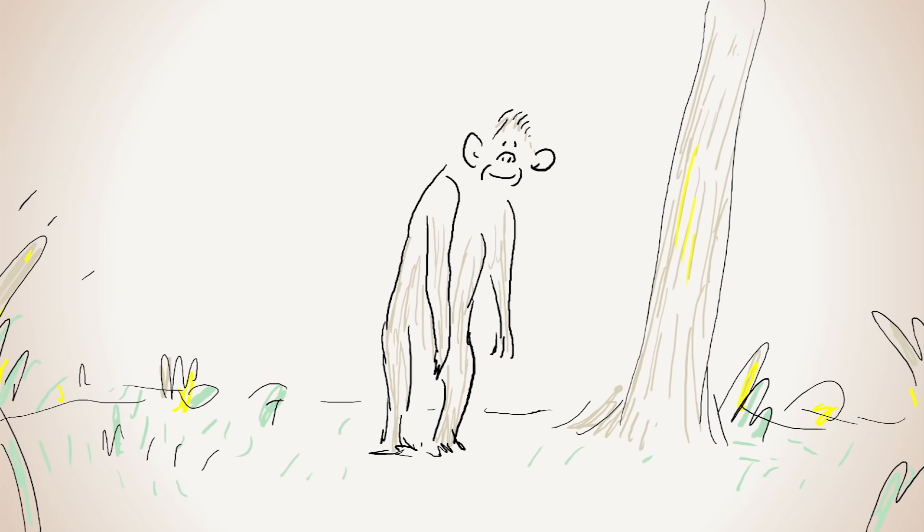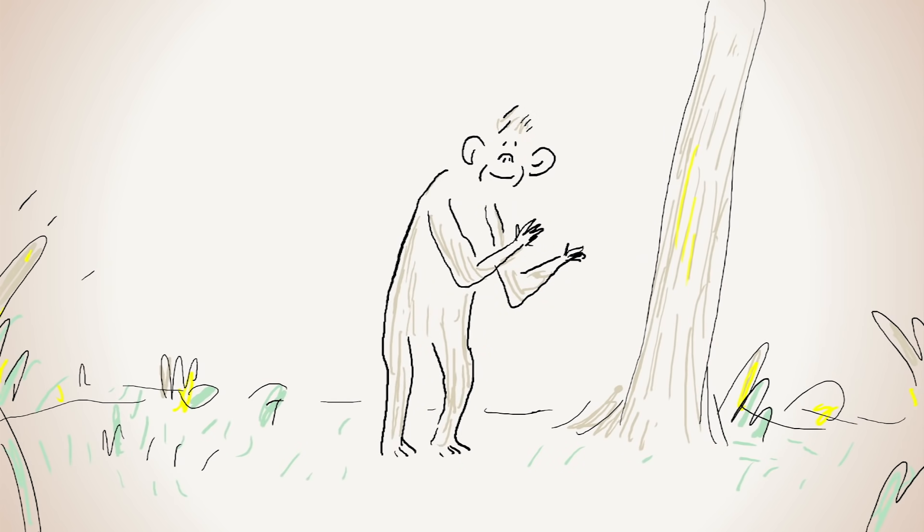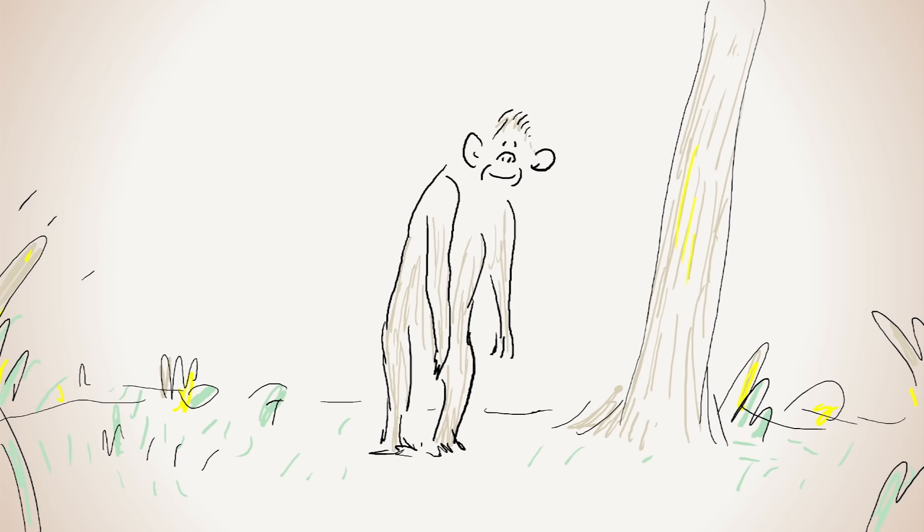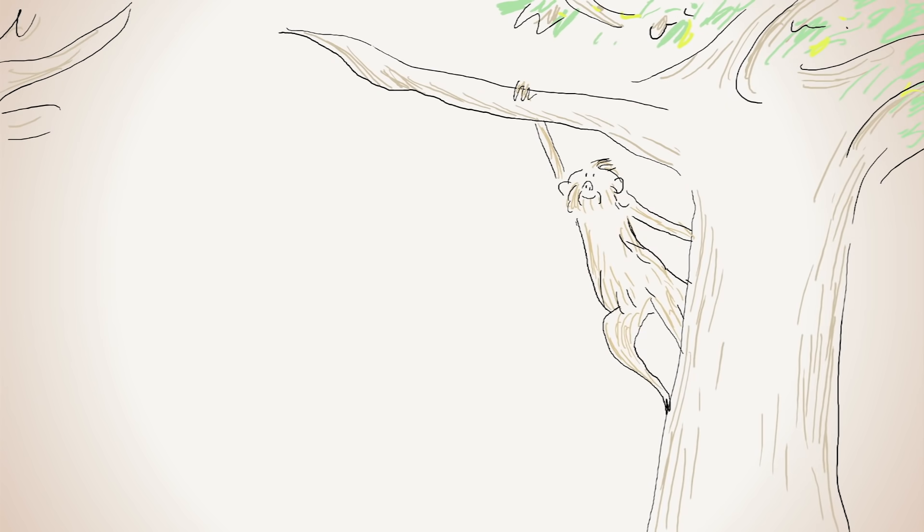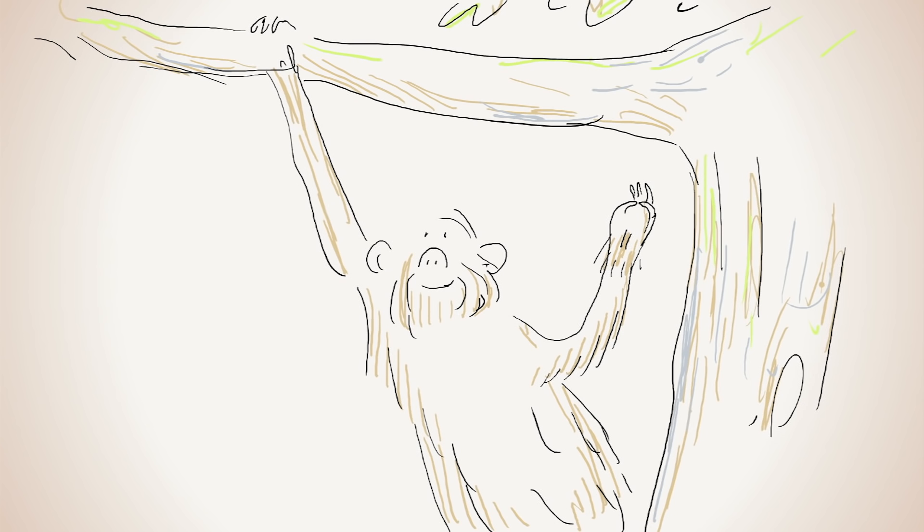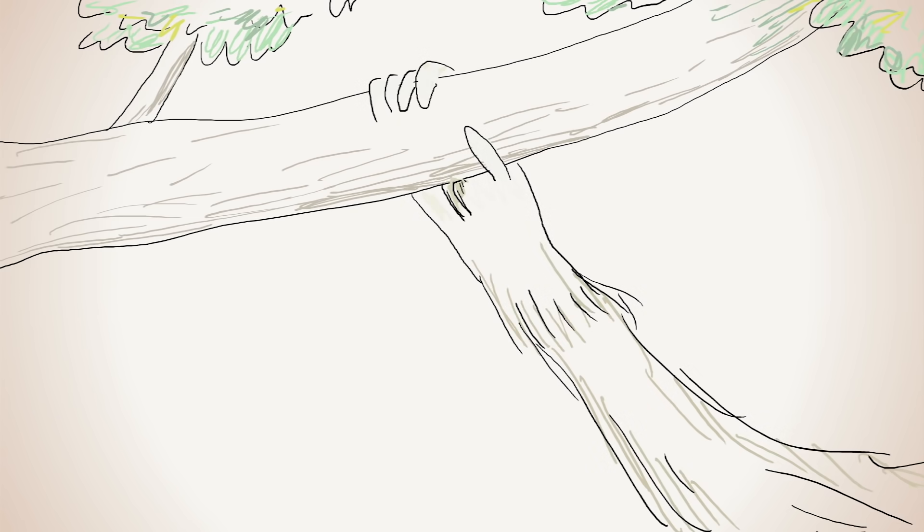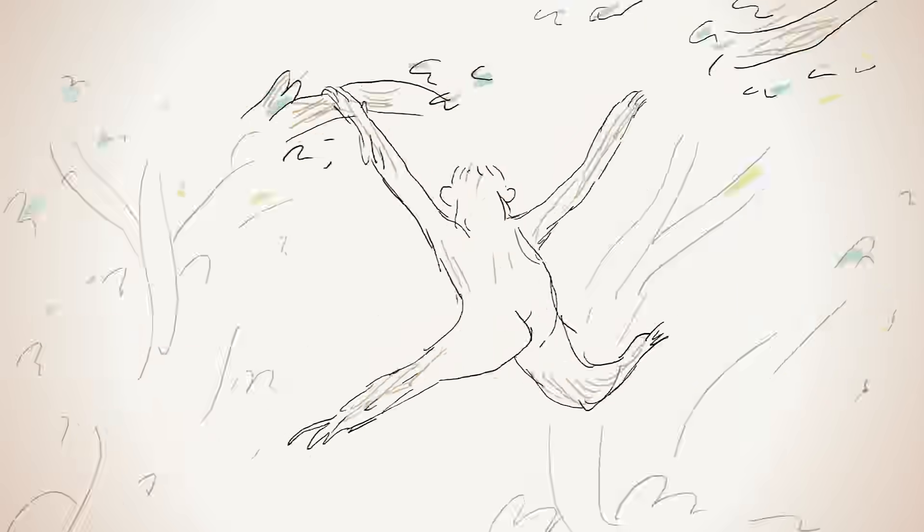Looking at our primate relatives, we can see that the palmaris longus is sometimes absent in those that spend more time on the land, but always present in those that spend more time in trees. So, we think it used to help us swing from branch to branch, and became unnecessary when we moved down to land.